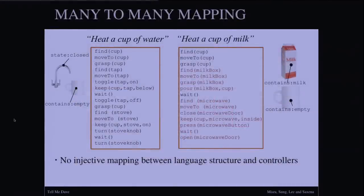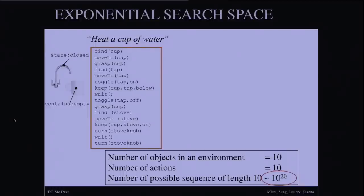Thus, we saw in the previous slides that the grounding depends upon the environment, but the grounding also depends upon the arguments of the sentence. Consider these two similar-looking sentences, heat a cup of water and heat a cup of milk. As we see, that the grounding of these two instructions is very different as illustrated by the instructions in red color. And this means that we cannot assume a kind of this injective mapping. Another thing that we see is that even a small part of the sentence, like heating a cup of water, can ground to a sequence which is fairly large.